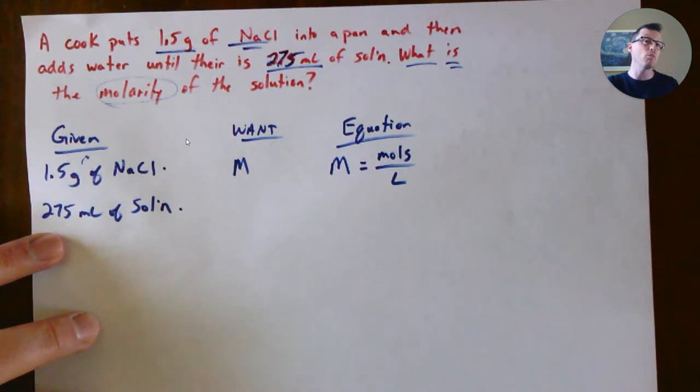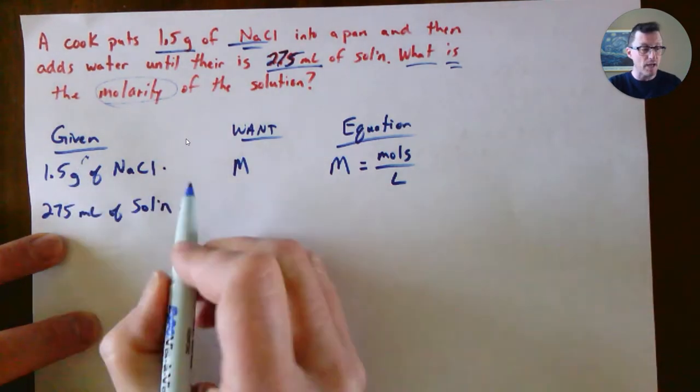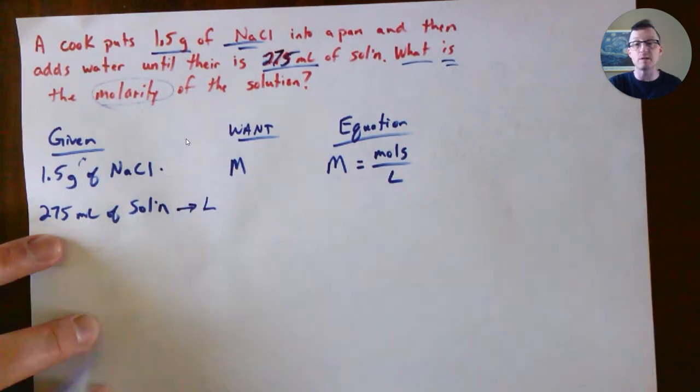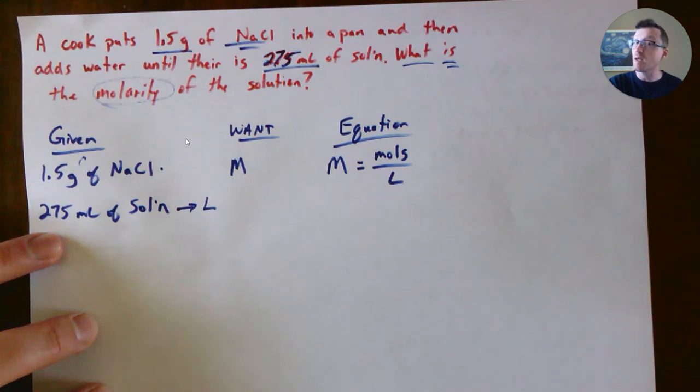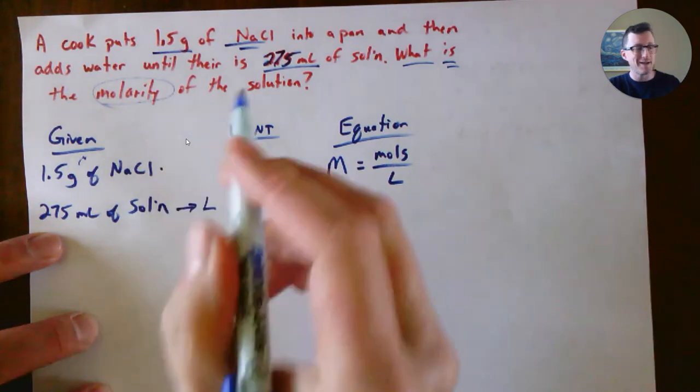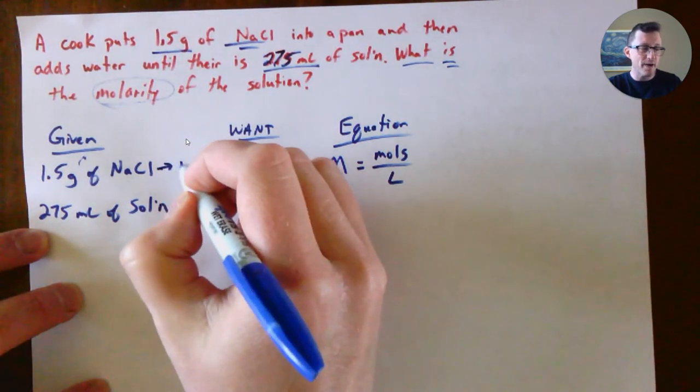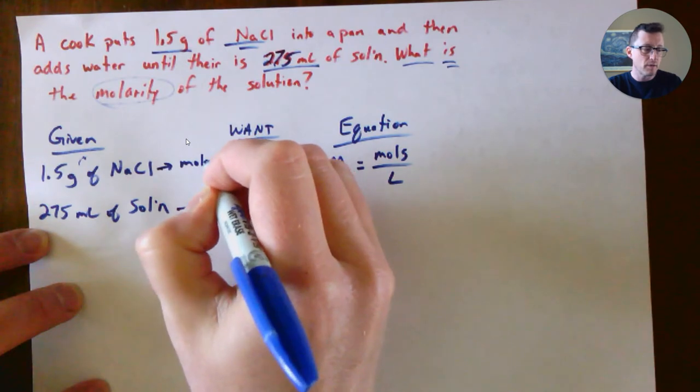We are given grams and milliliters. So right now we don't have either moles or liters, but we can actually change milliliters into liters. And if you understand the idea of molar mass, you can change grams into moles.